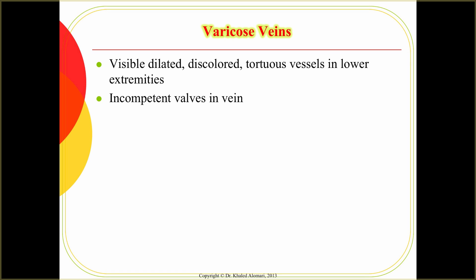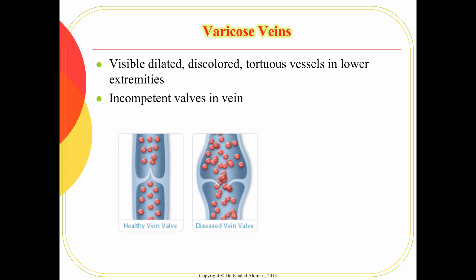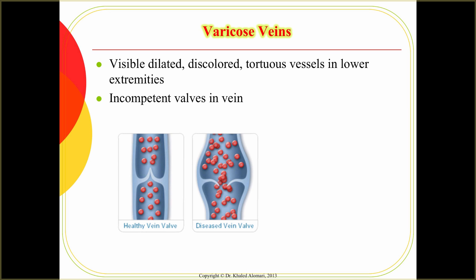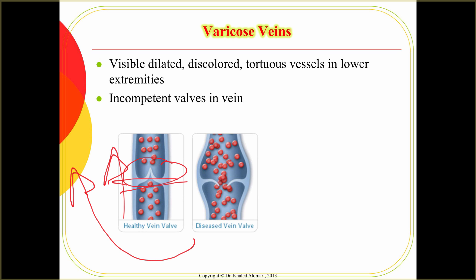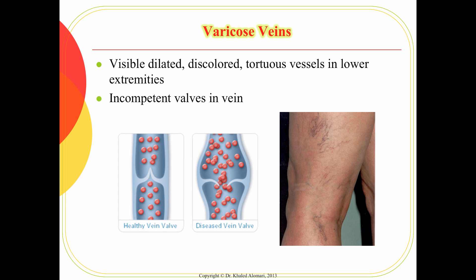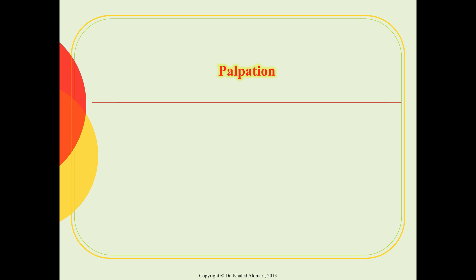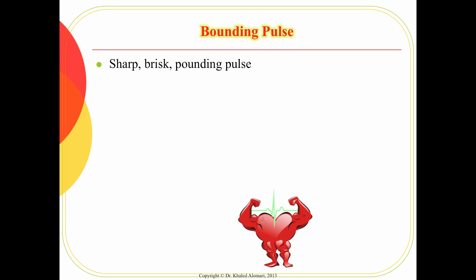Another symptom is varicose veins. Remember that veins have valves, and these valves should be healthy and prevent the backup of blood as it circulates back to the heart. In patients with diseased veins, the valves become loose, leading to accumulation of blood in that area. This is the shape you will see in patients with varicose veins.